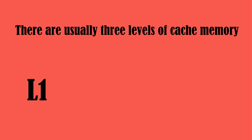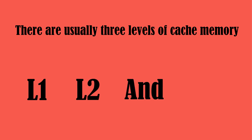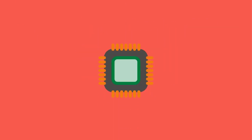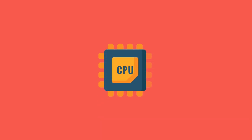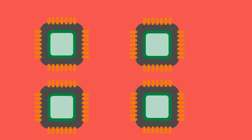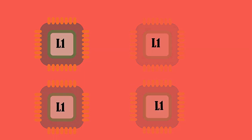There are usually three levels of cache memory: L1, L2, and L3 cache. The L1 or level 1 cache is the memory closest to the CPU core — actually, it's inside the core. All processors nowadays have multiple cores and they have an L1 cache inside each of their cores.